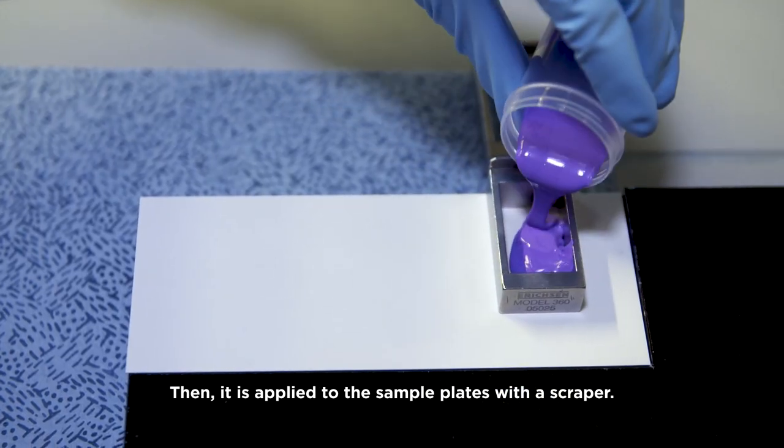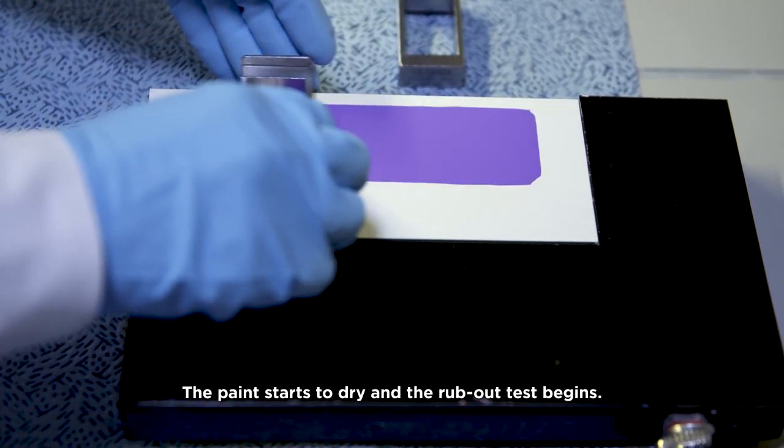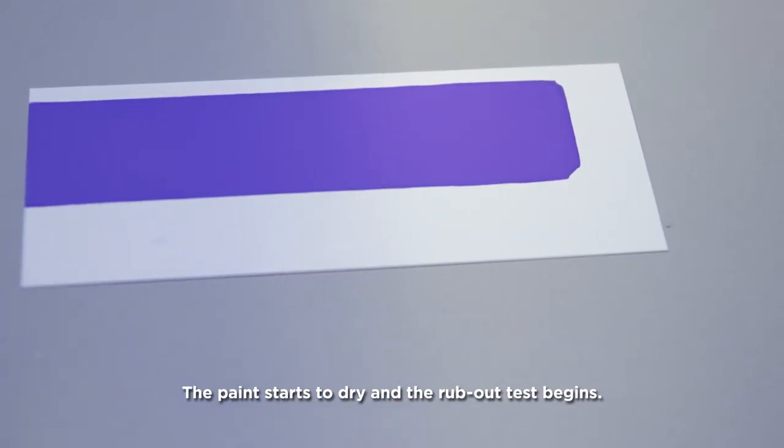Then it is applied to the sample plates with a scraper. The paint starts to dry and the rub-out test begins.